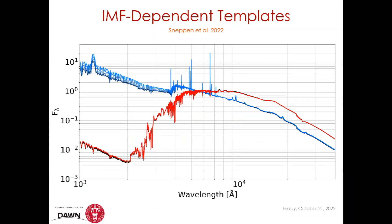For a blue star-forming galaxy, it's a more noticeable effect to change the IMF than for a red quiescent galaxy, simply because there's more of a young stellar population. It's also easier to pick this out on the blue end. But there's a significant problem: other things can change the UV slope, most notably extinction. What we really need to do is tell the difference between an exponential extinction changing the slope, and a power-law change from a change in the IMF. In principle you can do this with enough bands and high enough signal-to-noise, but you need a lot of information.